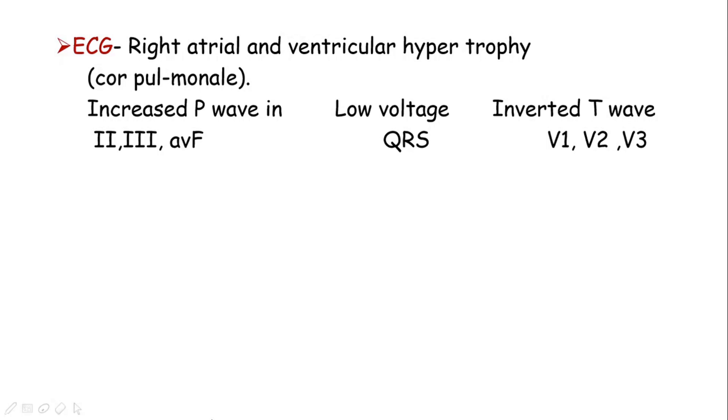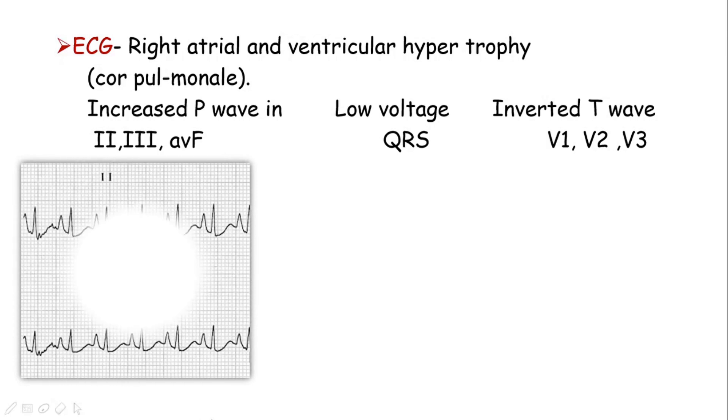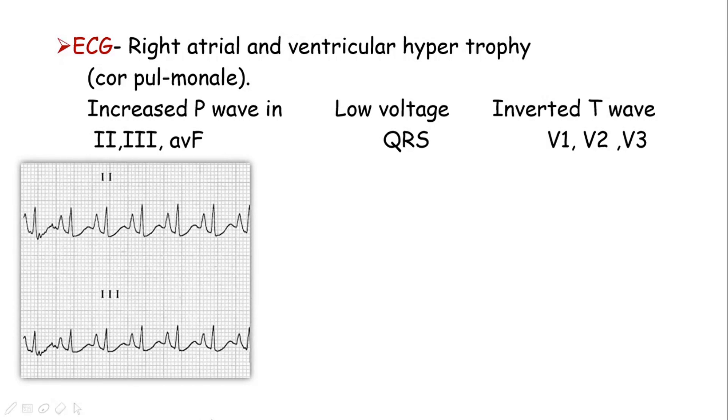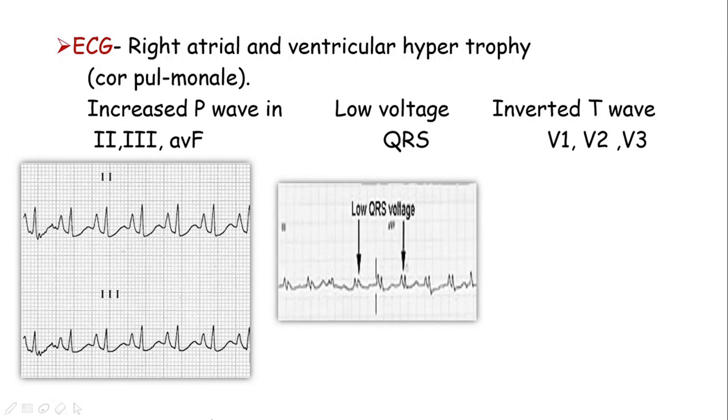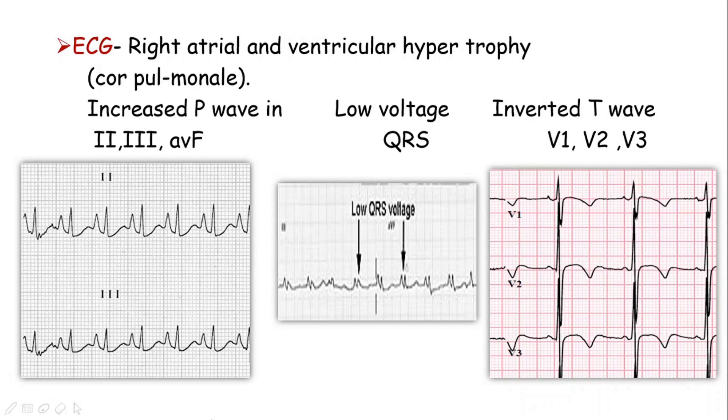So there can be right atrial and ventricular hypertrophy in long-standing COPD patient which gives an increased P wave or the size of the P wave is increased in the inferior leads 2, 3, AVF. The QRS complexes can be of low voltage because of the hyperinflated lungs over the heart and we can witness inverted T waves in V1, V2, and V3.